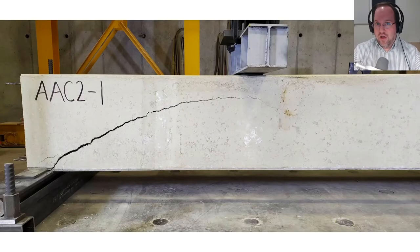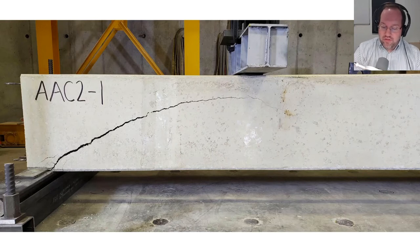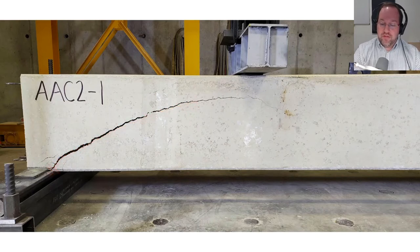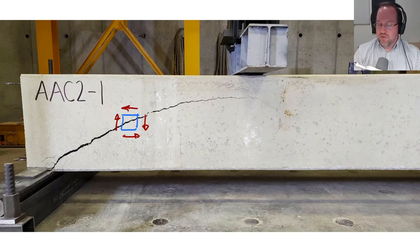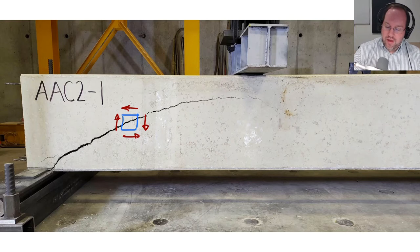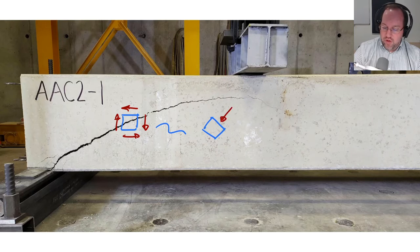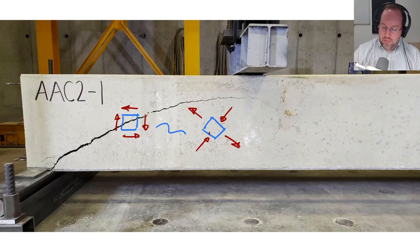Before we dive into the code, let's get some context on shear capacity in beams. Here I have a beam that has failed in shear, and I see the characteristic diagonal crack extending from the face of the support. If I look at my stresses at this location, I have shear stress going in this direction and no normal stresses because that's close to my neutral axis. If I transform that into the principal tension and compression, we'll see the compression goes along this way and the tension goes in the opposite direction — that tension is pulling my concrete apart, causing this diagonal crack.